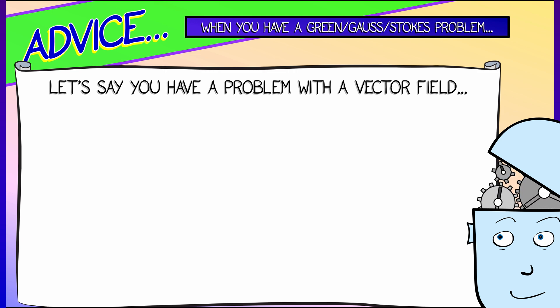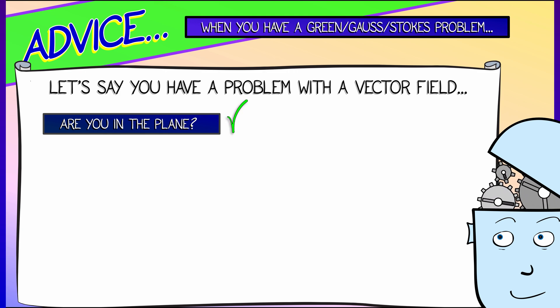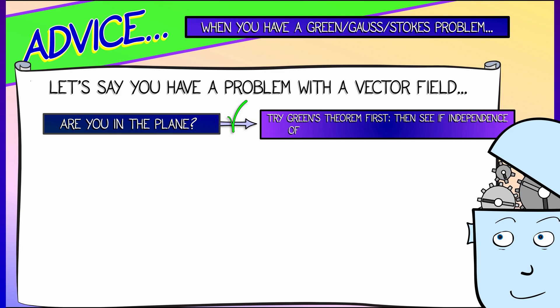The first question you should ask yourself is, am I in the plane? Am I in 2D? If I'm in 2D, there's not much to choose from. Try Green's theorem. And if that doesn't work, then try the independence of path theorem. See if that applies. Everyone always forgets about that. If neither of those is applicable, then you're going to have to do it directly.